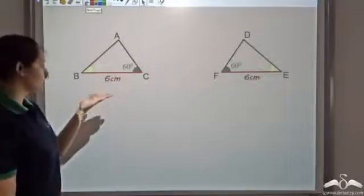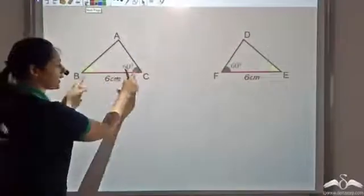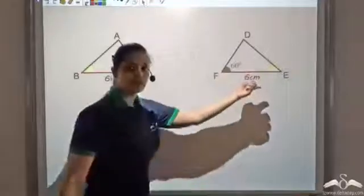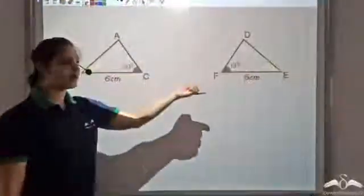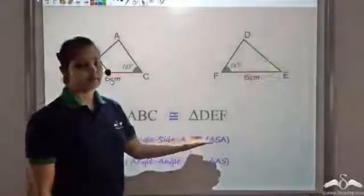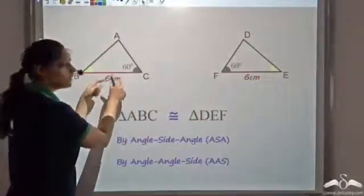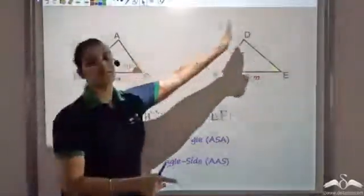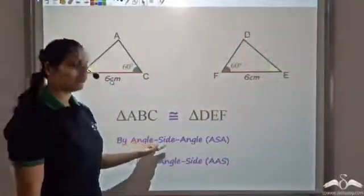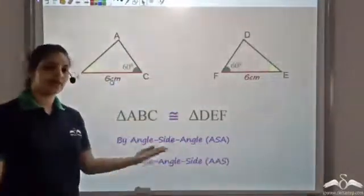For the next pair, we have two angles and one side equal to two angles and one side of the other triangle. When two angles and a side are given, it does not matter whether the side is included between the angles or not. So I can say these two triangles are congruent by ASA (angle, side, angle) or AAS (angle, angle, side).